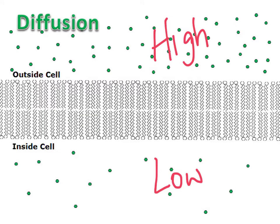During diffusion, particles move from high concentration to low concentration and they're able to pass directly through the cell membrane as long as they are small and do not have a charge.